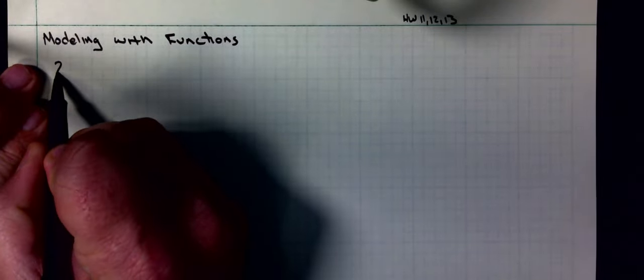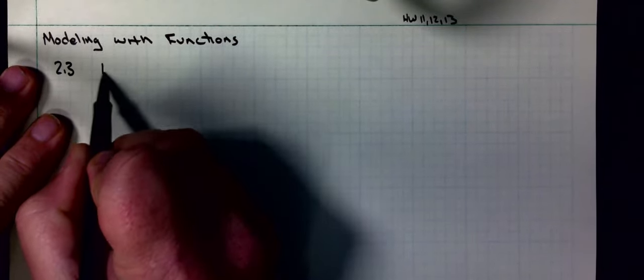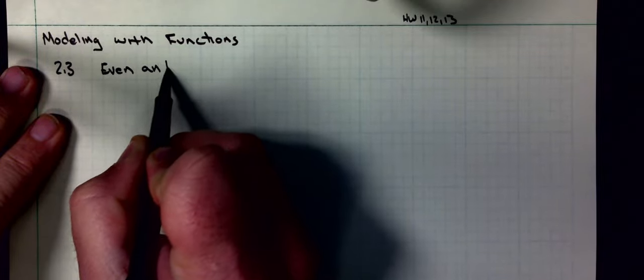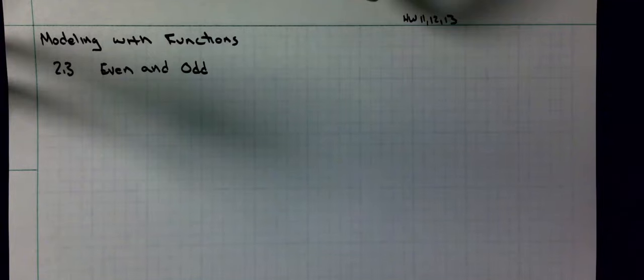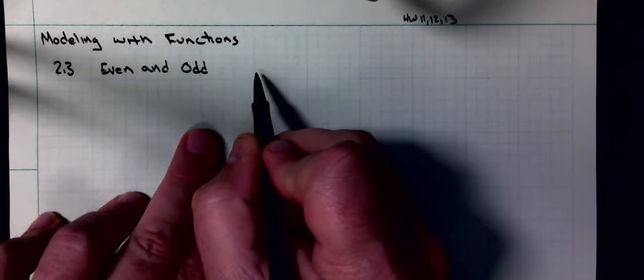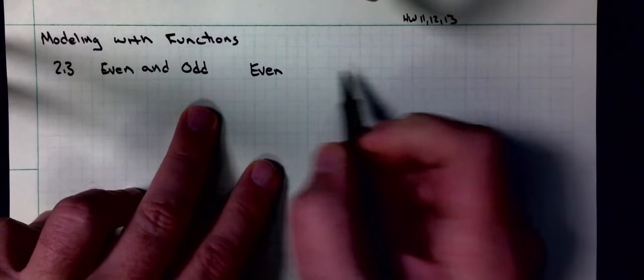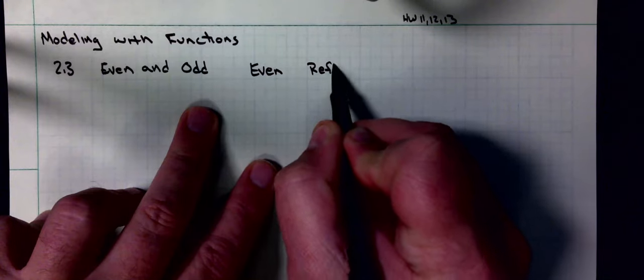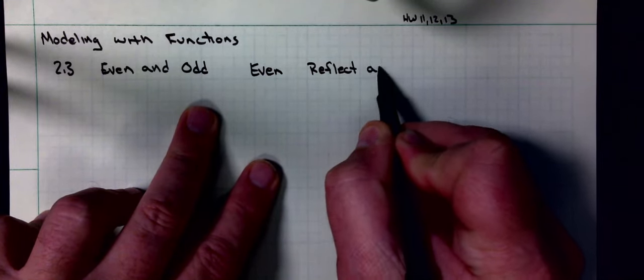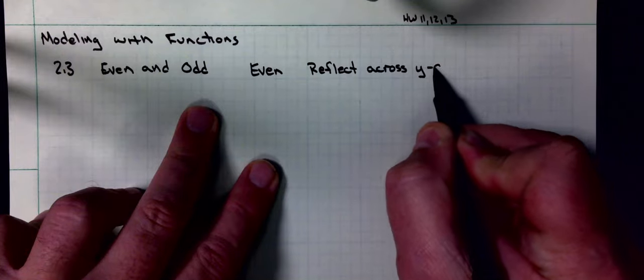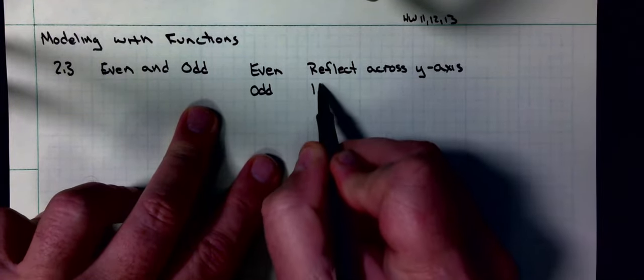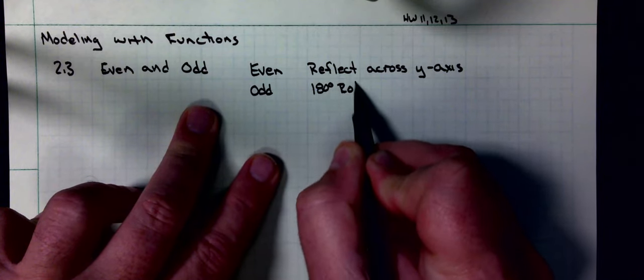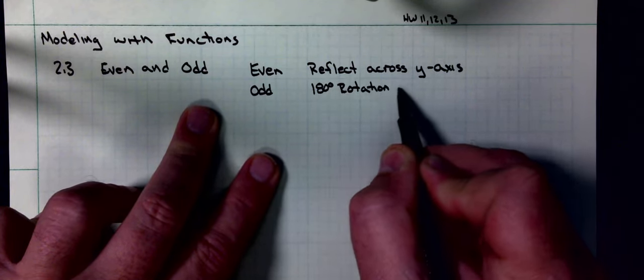The last part of 2.3 that we need to talk about are even and odd functions. A quick reminder: even functions are reflections across the y-axis, and odd functions have 180-degree rotational symmetry about the origin.